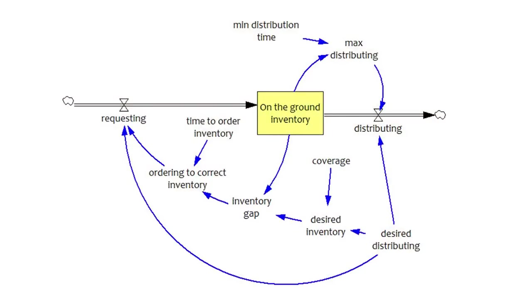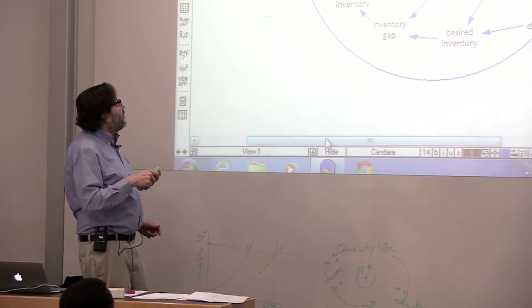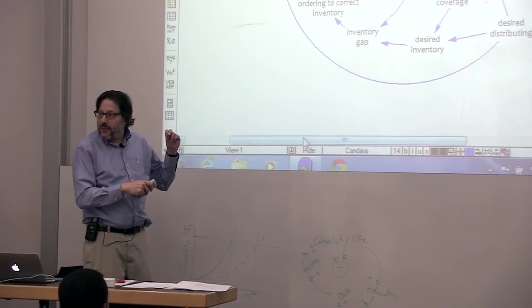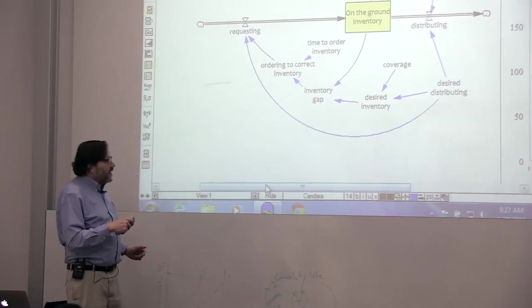A negative feedback loop. So this is actually a negative loop right there. And what this says is, the bigger our inventory gap, the more we request, the more we request, the more inventory on the ground, the more inventory on the ground, the smaller the gap. So this is our feedback loop.